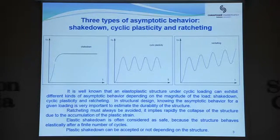It is well known that for plastic structures there are three types of asymptotic behavior: shakedown, cyclic plasticity and ratcheting. Shakedown is the most safe and preferable one. The structure behaves elastically after a finite number of cycles.